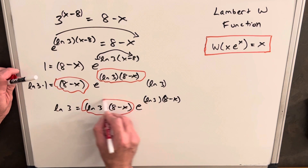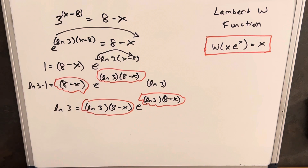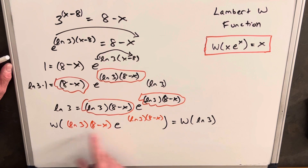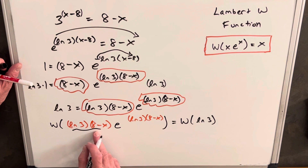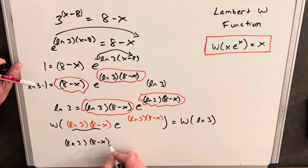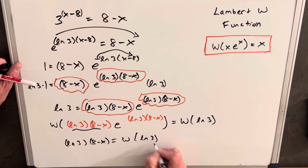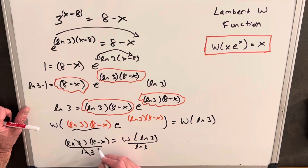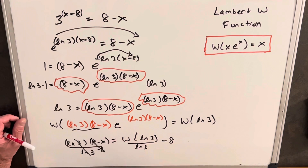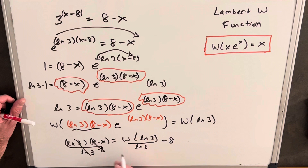Now we're in exactly the right form, so we can apply the Lambert W function to both sides. Flipping the equation and applying W, we get ln 3 · (8 minus x) equals W(ln 3). To solve for x, we divide both sides by ln 3 — these cancel on the left — then subtract 8 and multiply both sides by negative 1, giving us our clean expression for x.